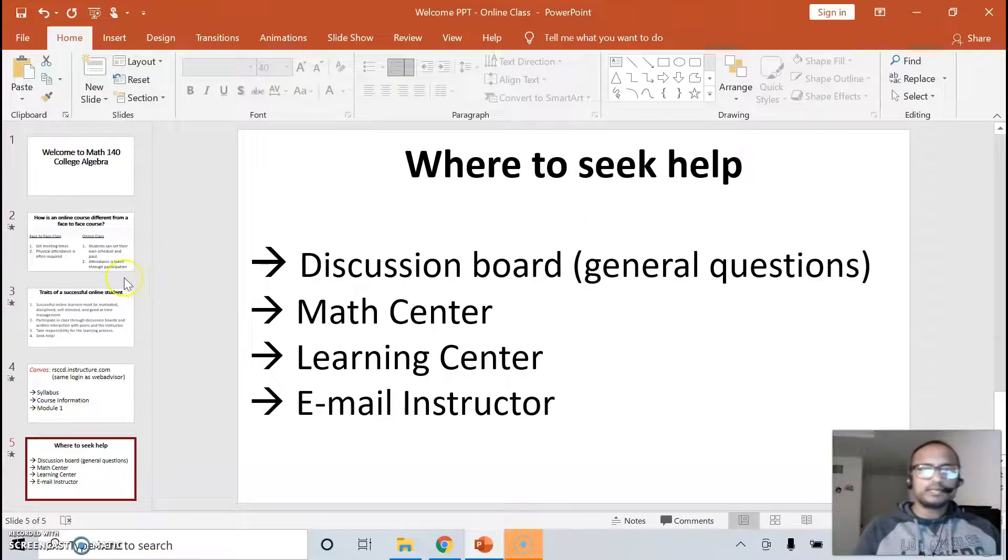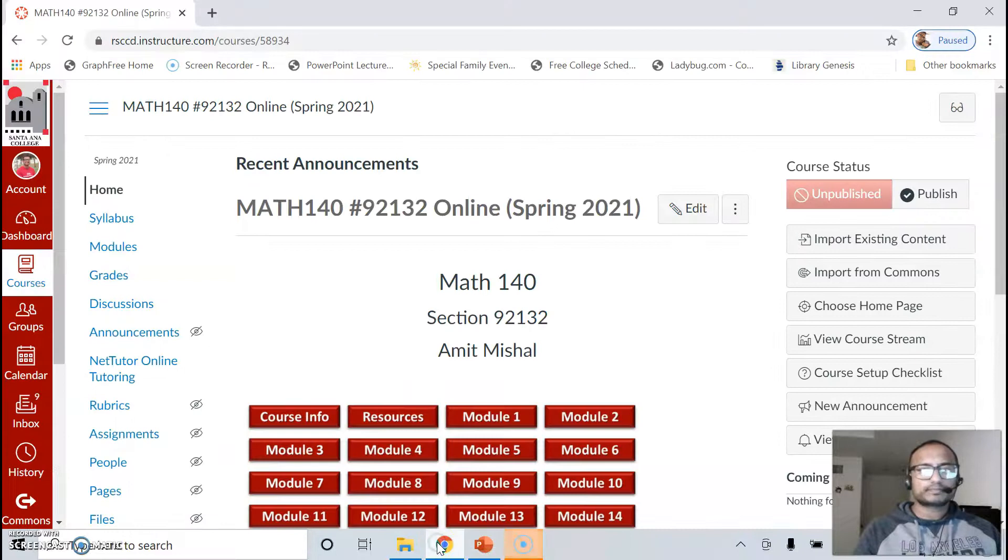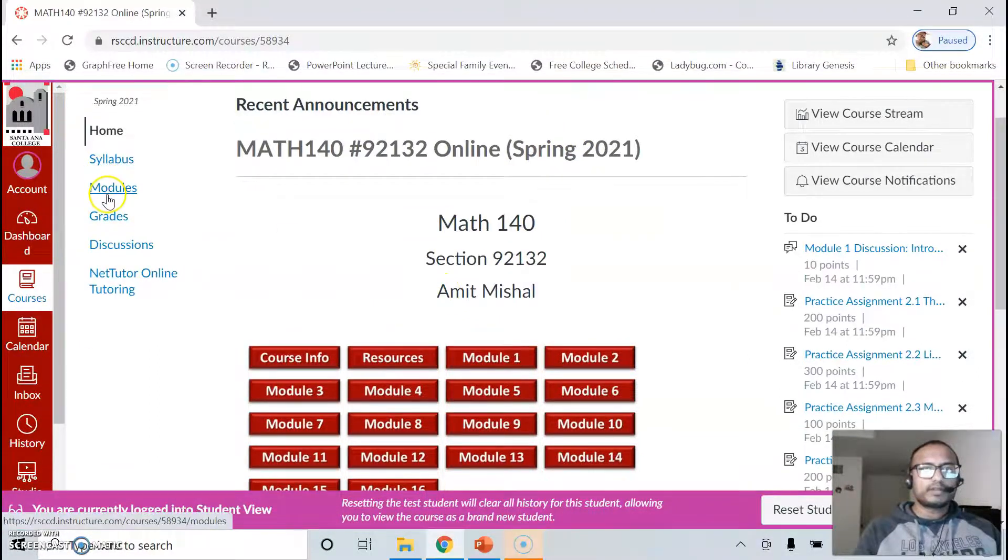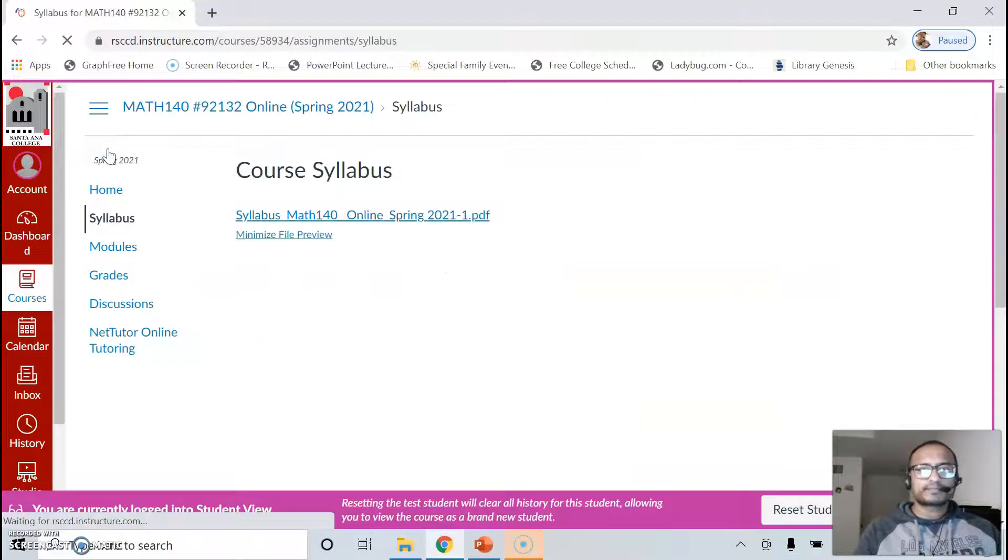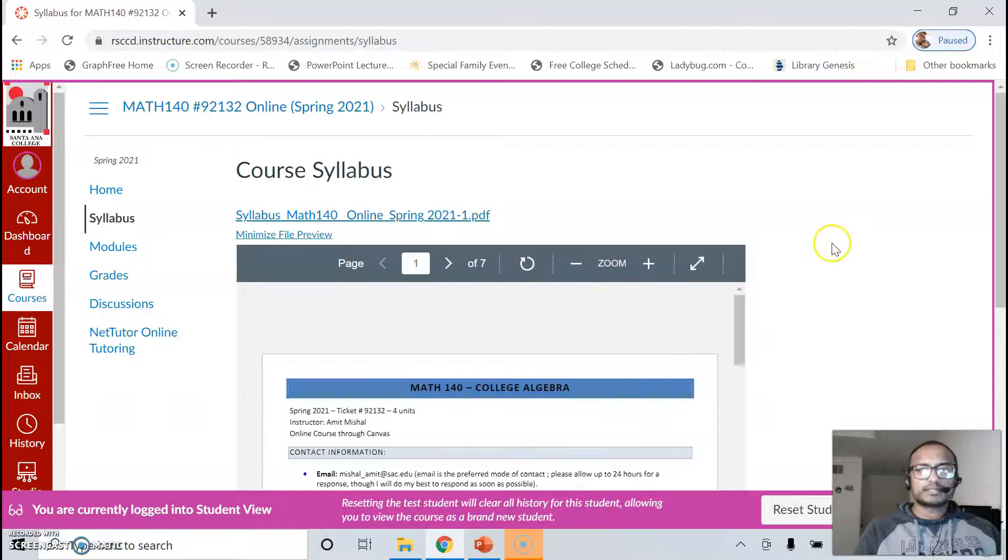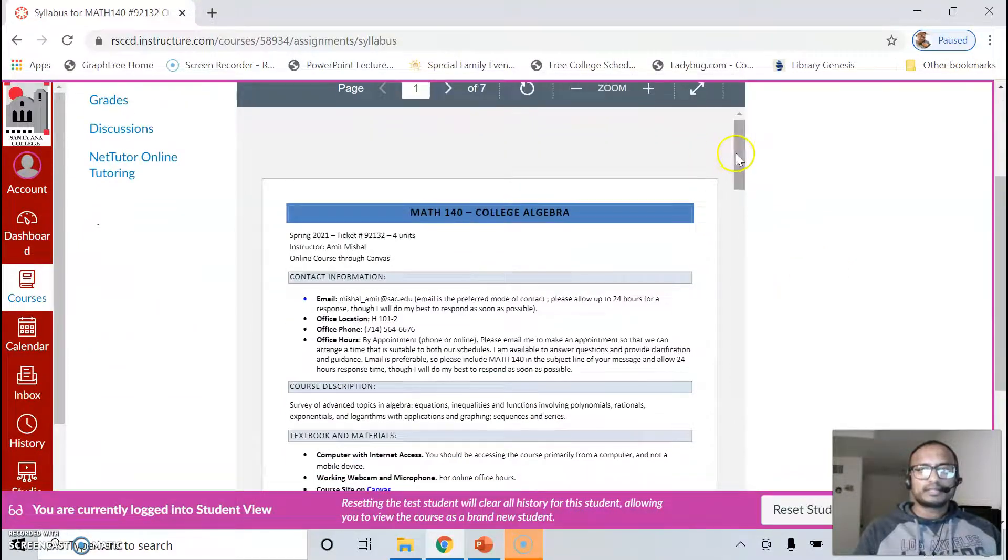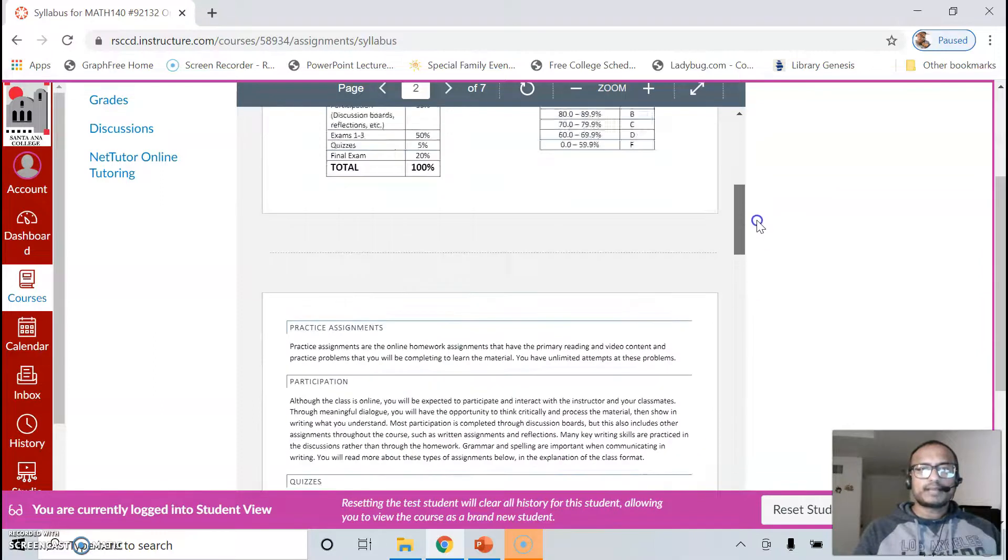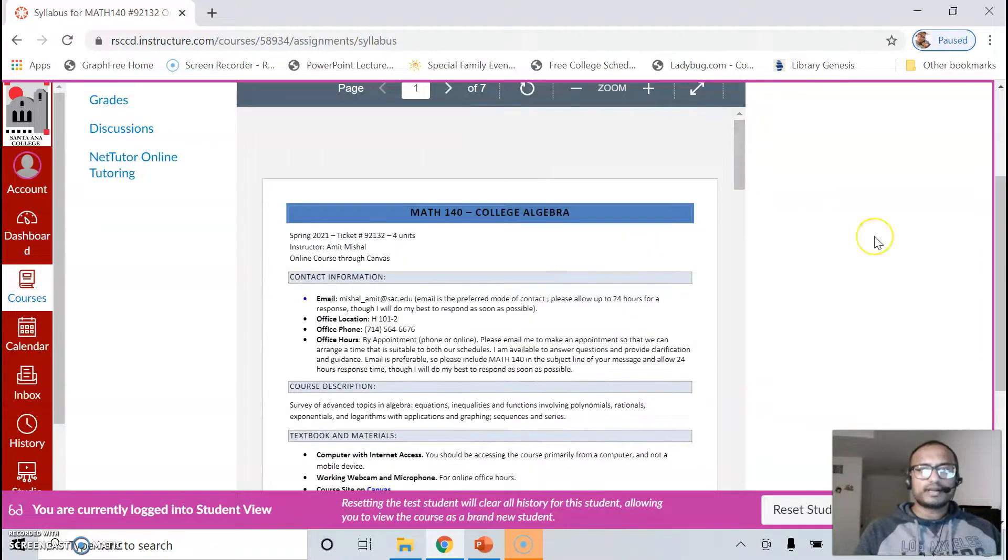So let me take you through our Canvas page. Your Canvas page looks kind of like this. The section number might be different depending on what semester you're taking this, but if you click on the syllabus you will see that the syllabus has been posted. Please go to the syllabus, read it in detail. If you have any questions, let me know. The exam dates are going to be posted there as well as in the announcement.